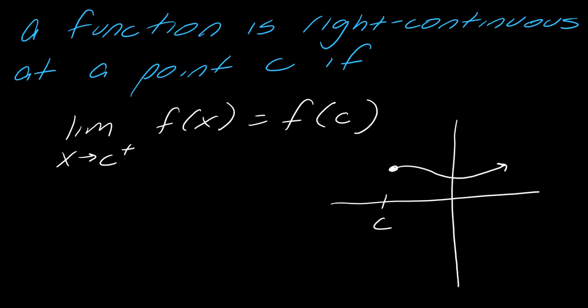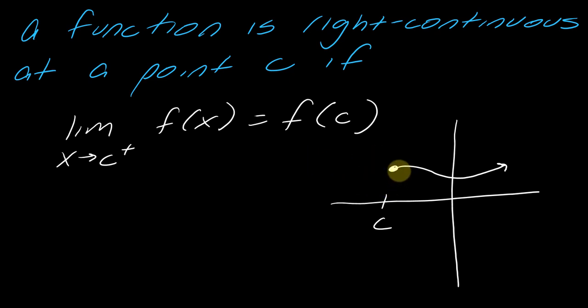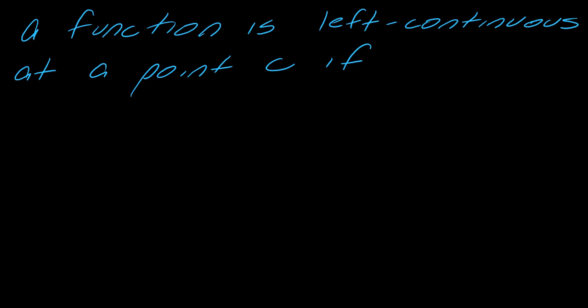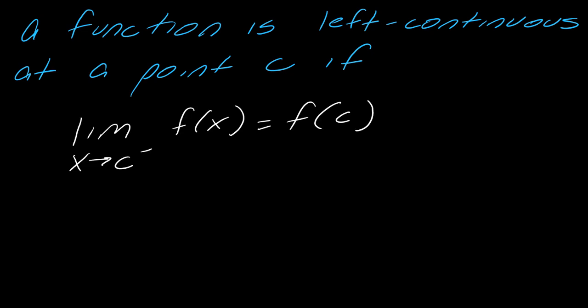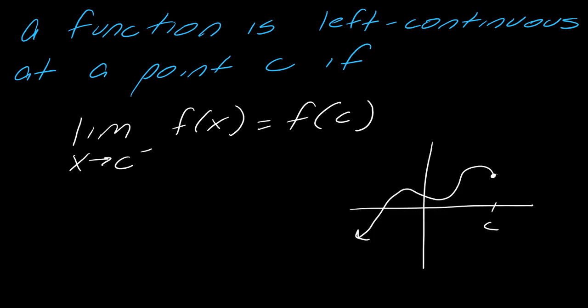So here is the actual picture of what's happening. Notice that the limit as we approach from the right exists, but there is no limit from the left — there's actually nothing over here. So this would be an idea of right continuity, and that point is filled in. Now what about left continuous at a point? The limit as x approaches C from the left will equal f of C. It's almost the same drawing except now we just have the limit from the left exists and there's nothing on the right.